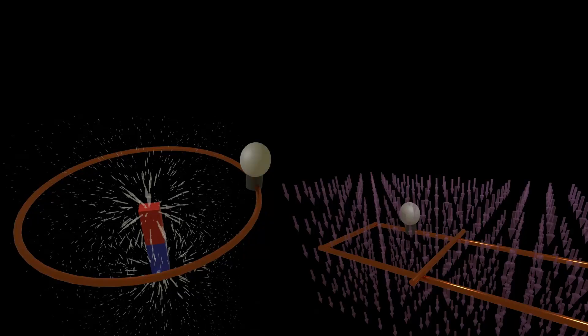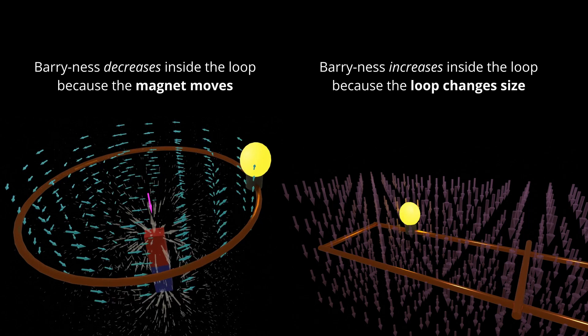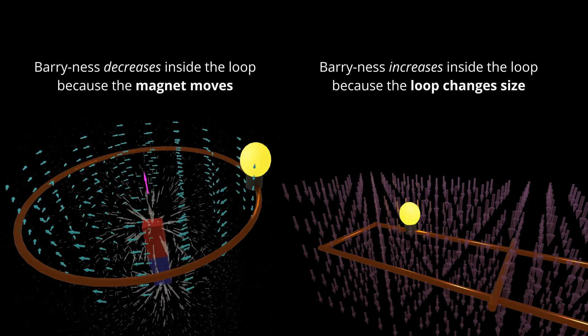In practice we usually find the EMF by thinking about the change in total Barryness in the loop called magnetic flux, which you can see changes the exact same way in both of our examples.